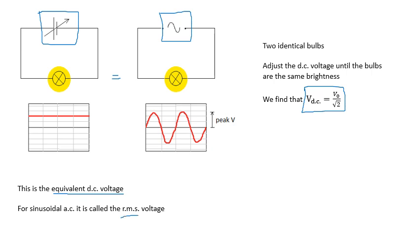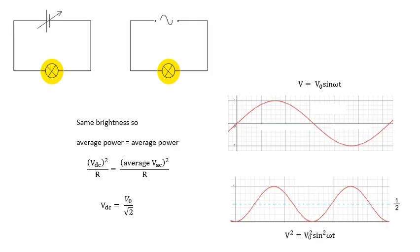RMS stands for root mean square. Why is it the RMS voltage? Because basically what we do is we take lots and lots of values of the voltage, and we square them, and then we take the average, the mean, and then you take the square root.